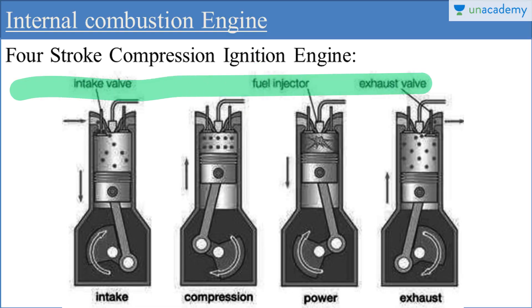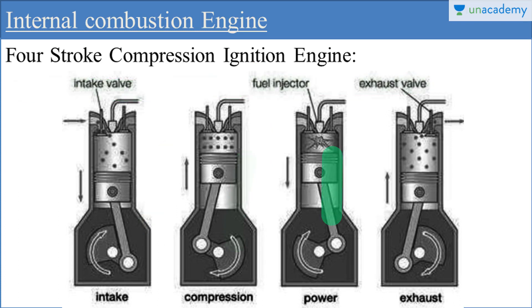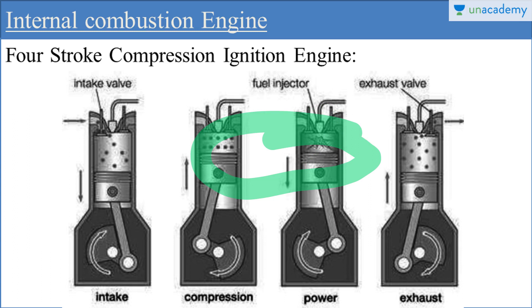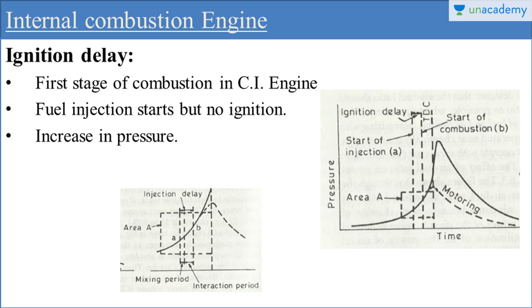This diagram is representing the working of a 4-stroke compression ignition engine. It consists of 4 strokes: intake, compression, power, and exhaust. The combustion process will start from the end of the compression stroke. When air is compressed in the compression stroke, the temperature and pressure of the air will increase, and at the end of the compression stroke the fuel injection will start. The fuel will inject into the cylinder and burn because of the self-ignition temperature or auto-ignition, and this combustion process will end before starting the expansion stroke. So this was the duration of combustion in a compression ignition engine.